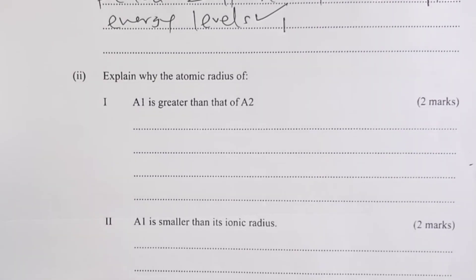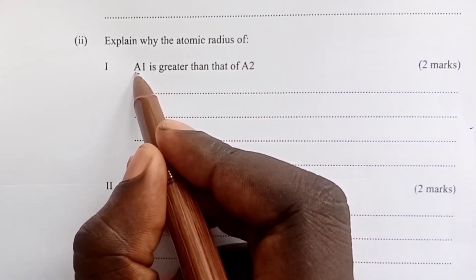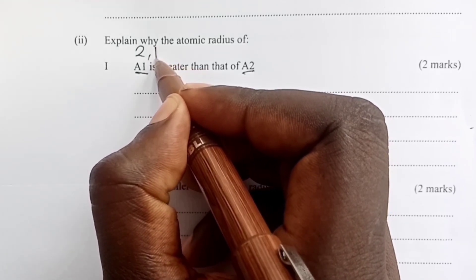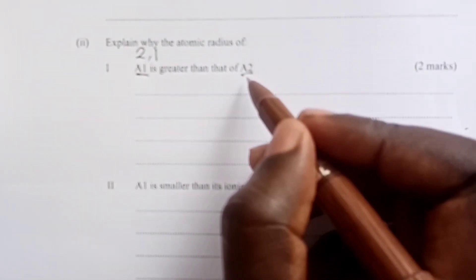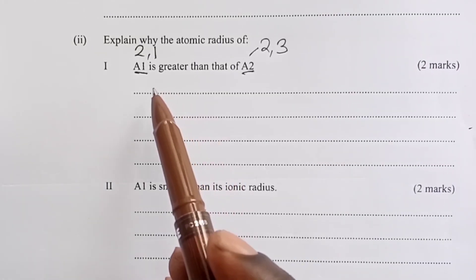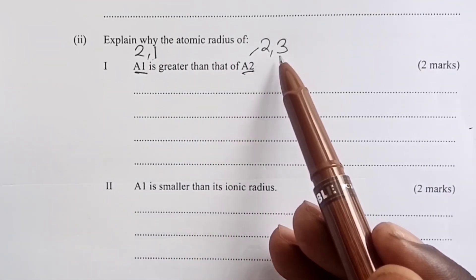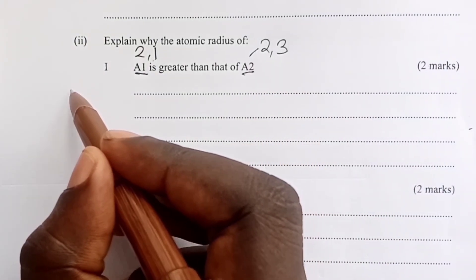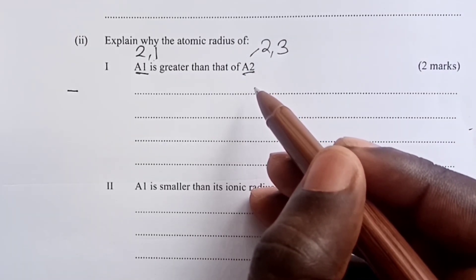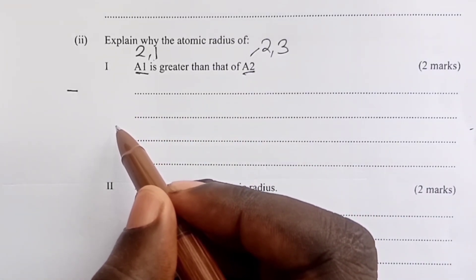We give a reason that it has 2 occupied energy levels for the next mark, making them 2 for the first question. Now to the next question: explain why the atomic radius of A1 is greater than that of A2. A1 has a configuration 2,1 because it's atomic number 3, and A2 has a configuration 2,3 because it has atomic number 5. What happens is A2 has more protons or A2 has a greater nuclear charge.